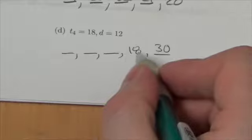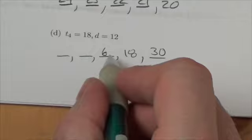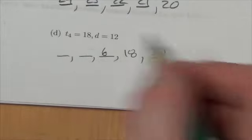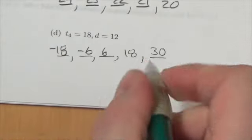18 minus 12 is going to be 6. Then I go backwards one more step. 6 minus 12 will end up being negative 6. Negative 6 minus 12 will be negative 18.